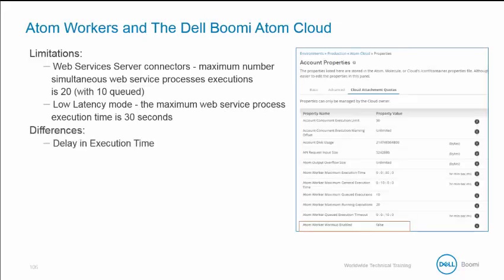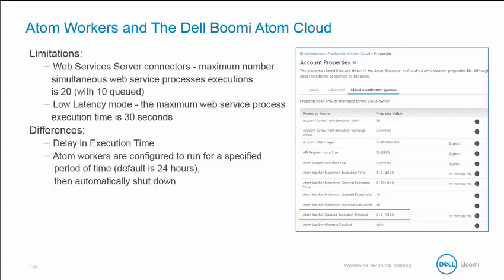There are some minor differences in process executions using an atom worker. The first request causes the atom worker to start and can cause some delay in execution time. On the Attachments quota tab, cloud owners can set the minimum atom worker's property, which specifies the number of atom workers needed to run at all times. Atom workers are configured to run for a specific time — the default is 24 hours — and then shut down automatically. A new atom worker starts at the next request. Cloud owners can also set the atom worker warmup enabled property to make sure atom workers are running and ready to take over when another atom worker shuts down.